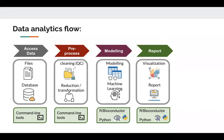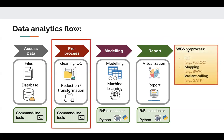A typical data analytics flow includes four steps. When we talk about data analysis, it usually includes two major parts: the pre-processing step where we clean and curate the datasets, and the modeling part where we do the statistical data analysis. In the realm of biomedical science, for example, when we have whole genome sequencing data, we need to do some quality check, map the sequence to the reference genome, and do some variant calling. These are usually based on command line tools such as FASTQC, BWA, and GATK.